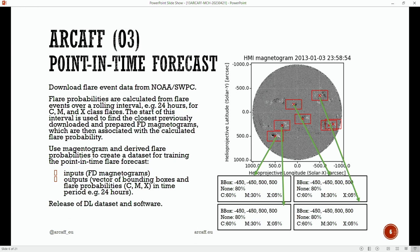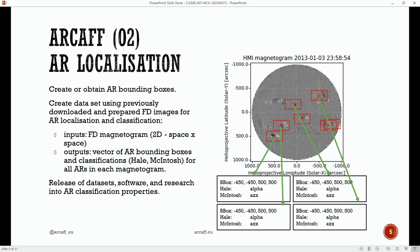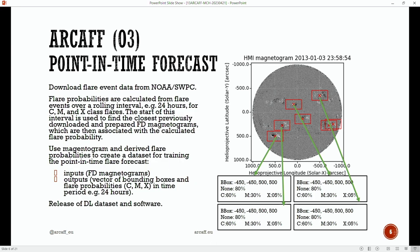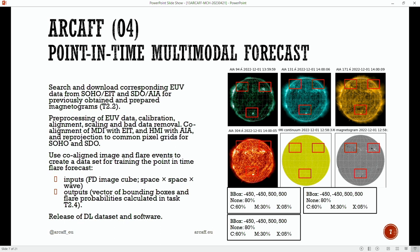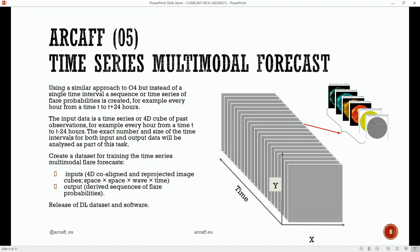Then we move on to flare forecasting. It's the same idea except previously we had classifications, now we want to move on to flare forecasting—so instead of classifications we have probabilities. You can try and use the same architecture but maybe change the output layers and final layers a little bit. Then we have multimodal flare forecasting—same as before but now we include multiple wavelengths and bounding boxes. Finally, we've got the main goal which is time series flare forecasting—so we've got a 4D input: space, wavelength, and time—and then we have a vector of bounding boxes and probabilities for every active region that's detected.